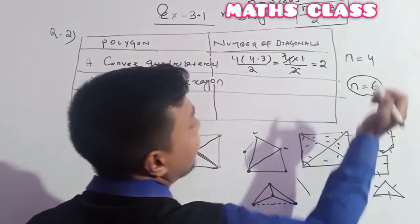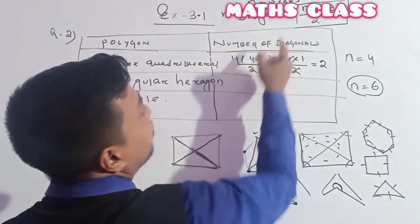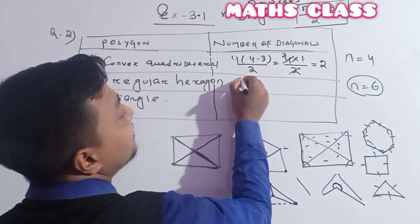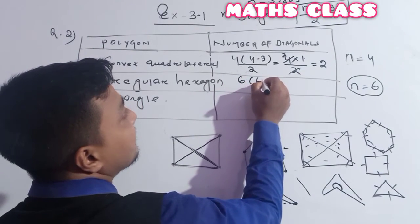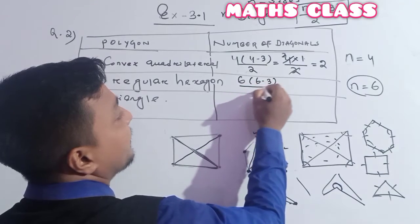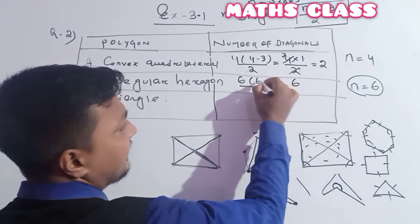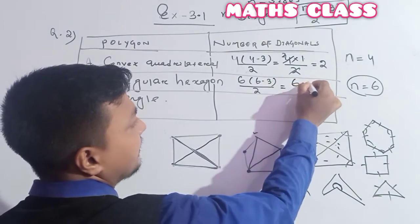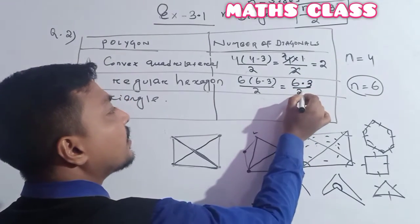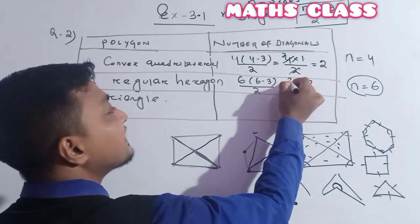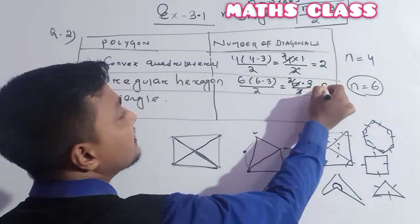Hexagon has 6 sides, so n = 6. The formula gives: 6 × (6−3) / 2 = 6 × 3 / 2 = 18 / 2 = 9. So the number of diagonals a regular hexagon has is 9.